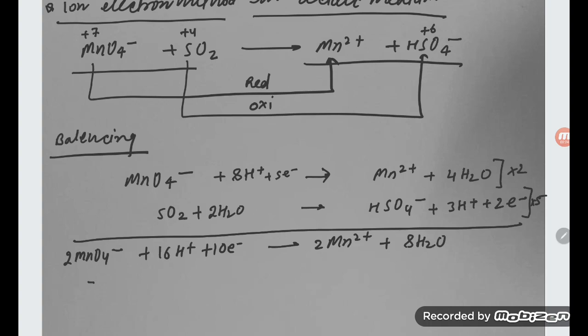And this one, 5SO2 plus 10H2O. This side you see, 5HSO4 minus plus 15H plus plus 10 electrons.